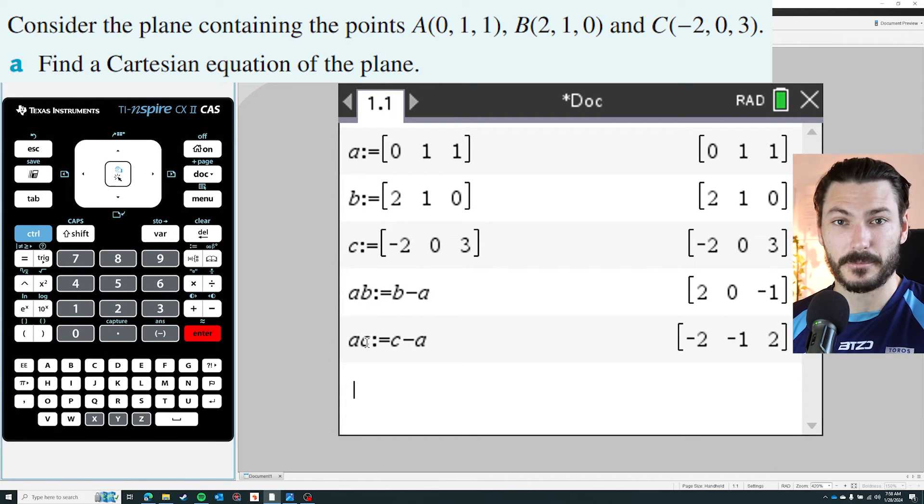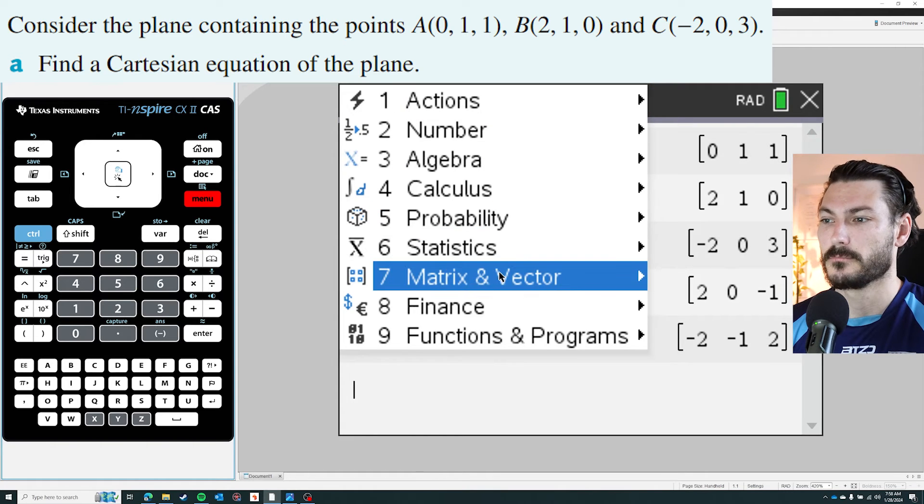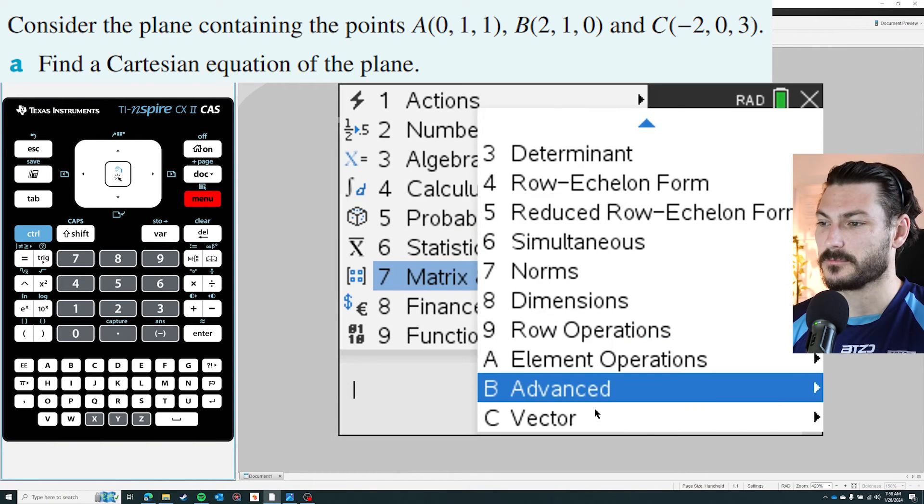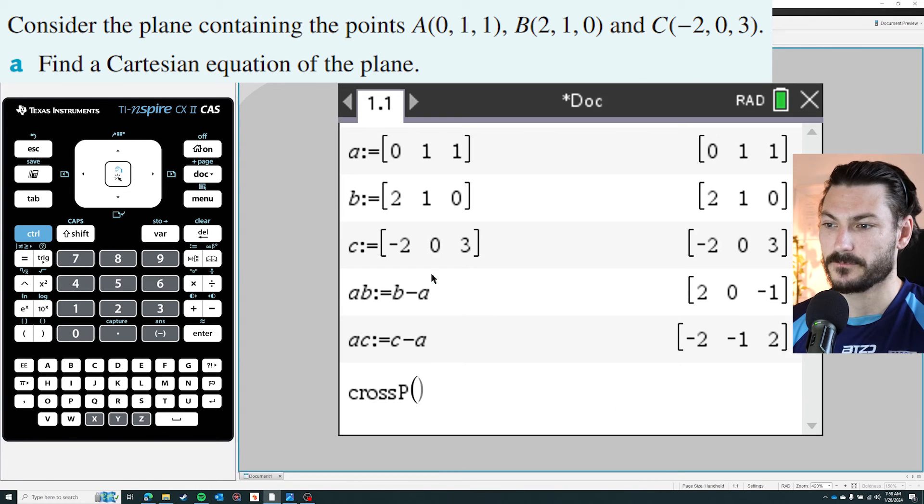And there are two vectors that lay on the plane. Now in order to find the normal, which is a vector perpendicular to the plane, I need to do the cross product between these two vectors. So again the long way is to go menu, matrix and vector, and this time you do go down to vector and find the cross product function here. So it's just crossP.